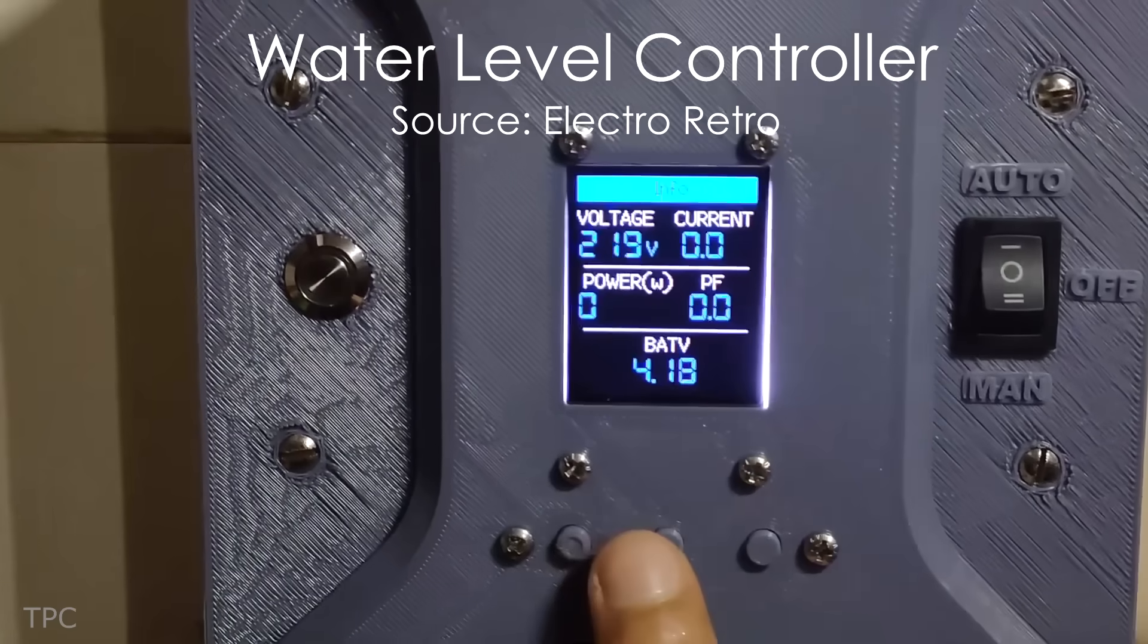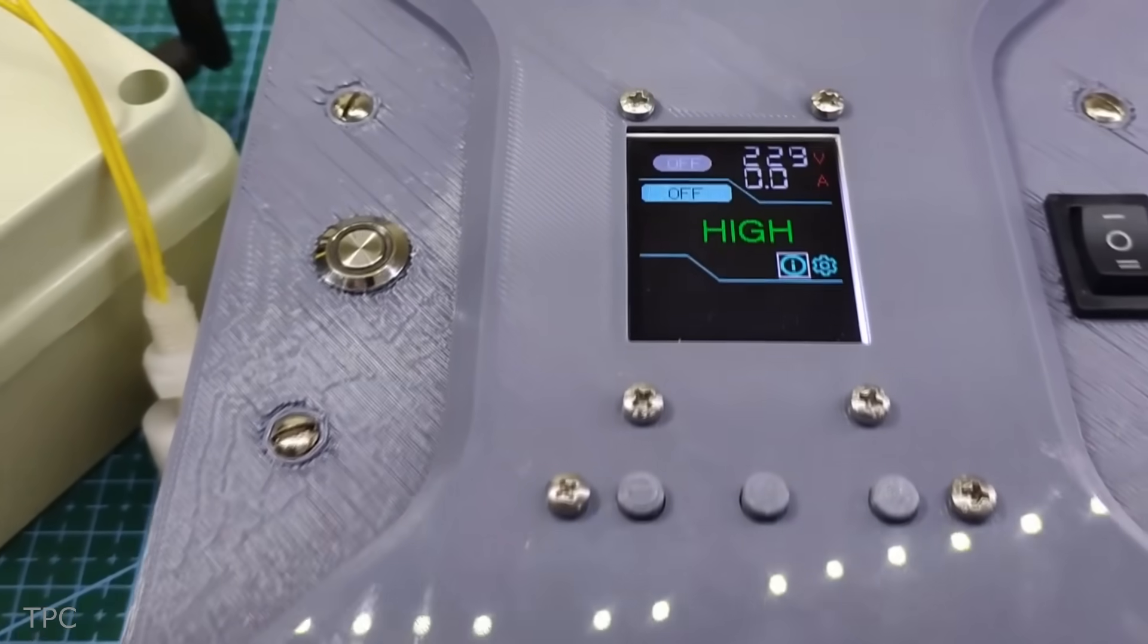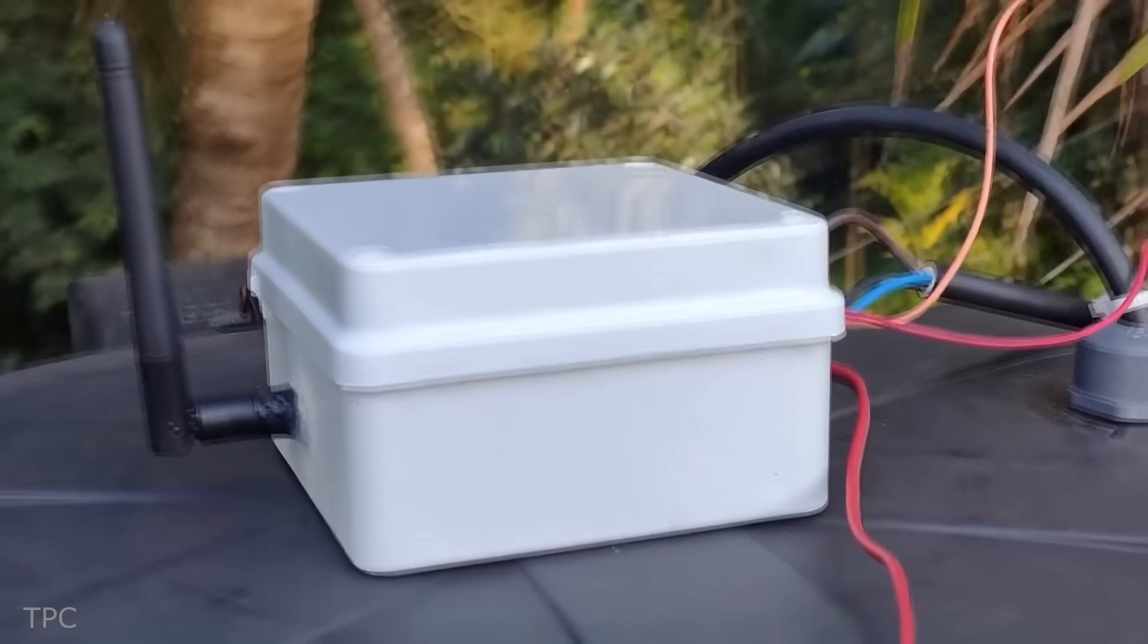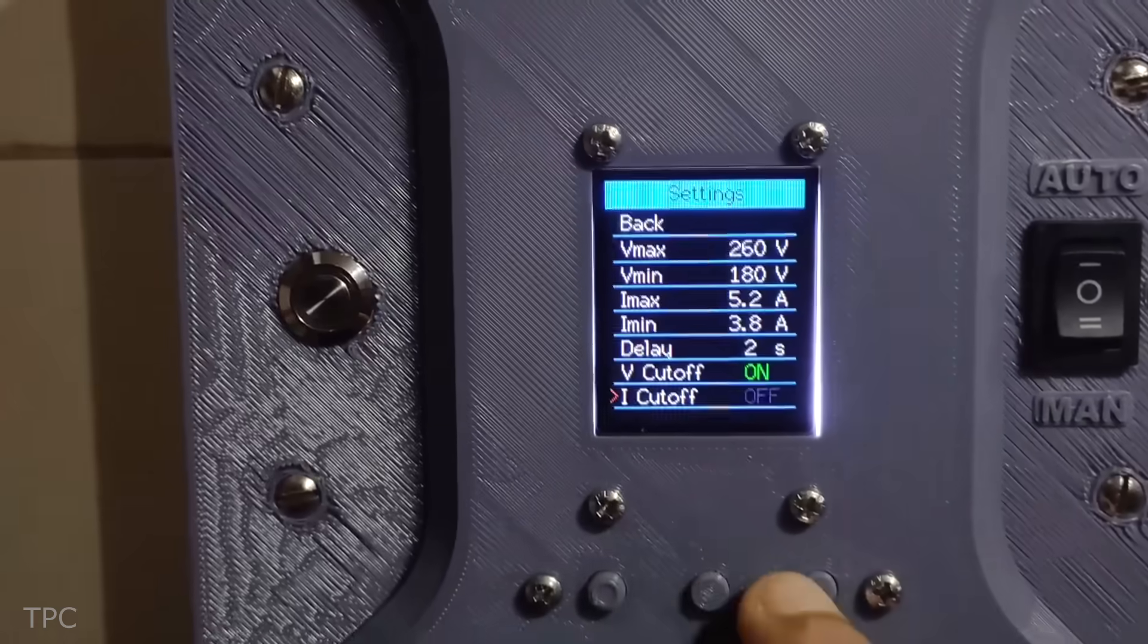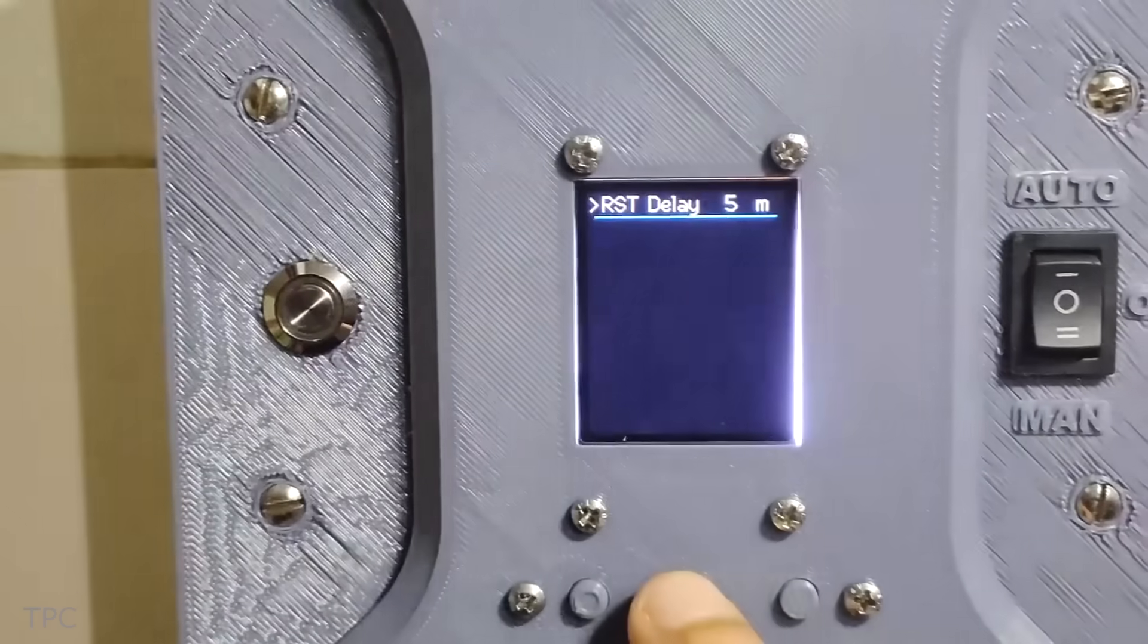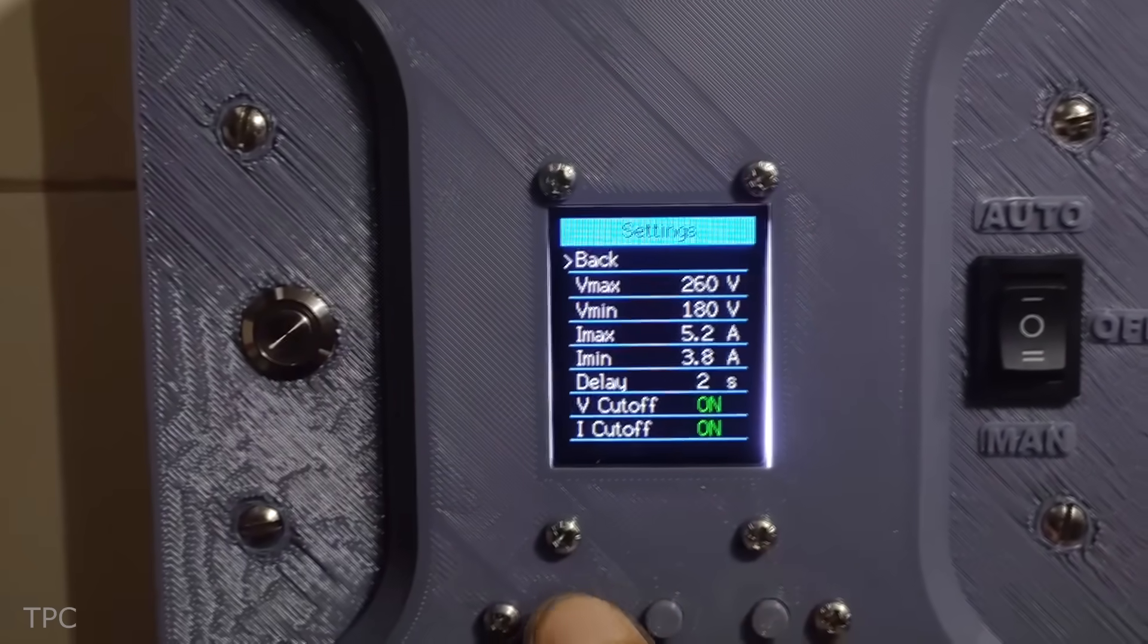Next, we have a wireless water-level controller created by Electro Retro. It uses the ESP-NOW protocol to transmit data, with a range of up to 500 meters in a clear line of sight. The controller is designed with built-in protections against high or low voltage, overload, and dry run conditions.